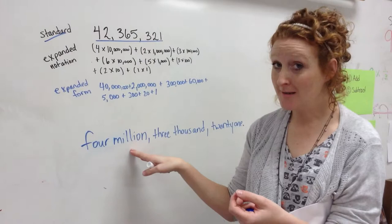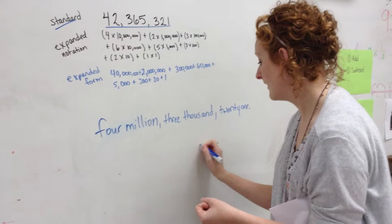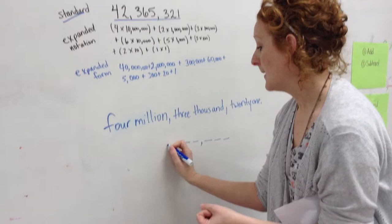The first thing that I need to do is figure out how many digit spaces I need to represent million, because million is my biggest place value. So, ones, tens, hundreds, comma, thousands, ten thousands, hundred thousands, comma, million.